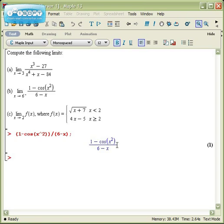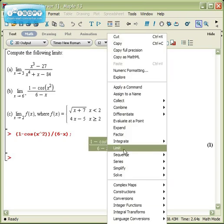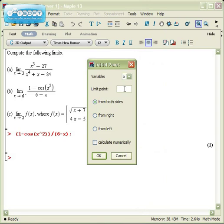Now, if I go and select this, right-click on it, I can choose the limit. The limit point this time is 6, but I want to take the limit from the left.